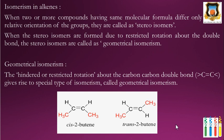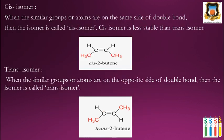An example is cis-2-butene and trans-2-butene. In cis-2-butene, the two hydrogens are on the same side and the two CH₃ groups are on the same side of the double bond. In trans-2-butene, the CH₃ groups and the two hydrogens are on opposite sides. The cis isomer is less stable than the trans isomer because there is steric hindrance when the two groups are on the same side.